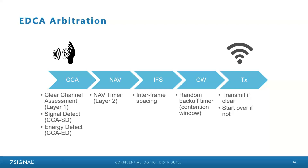We start with the clear channel assessment — our layer one check. Then we move up to layer two and check our NAV timer. If the NAV timer is expired, we know we're not expecting any other transmissions immediately. Then we wait an interframe space — a period of time where we just wait even though we haven't heard anything. Then we wait again with the contention window random backoff timer, counting down a pseudo-random value before finally transmitting. CCA is running all the way through this process until we transmit.